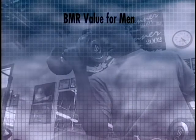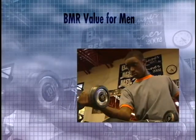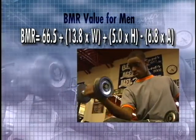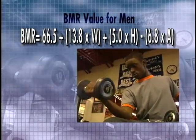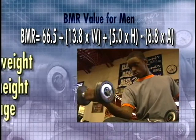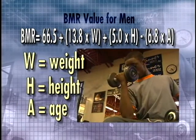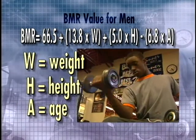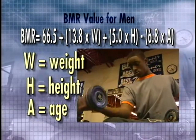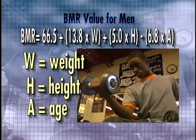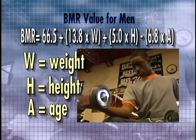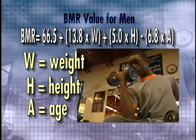The BMR value for men — in this case, RJ — can be calculated using the following equation, where W is the weight in kilograms, H is the height in centimeters, and A is RJ's age.